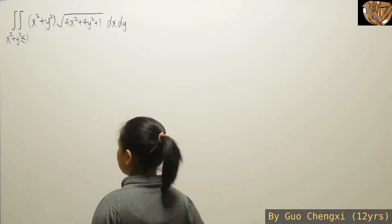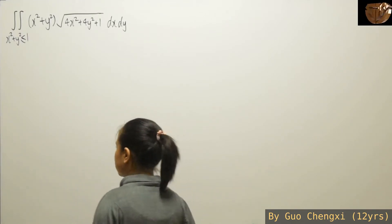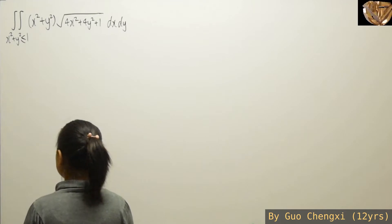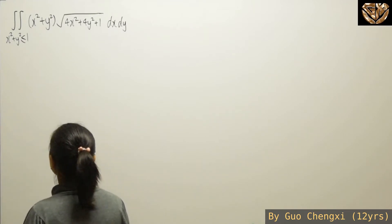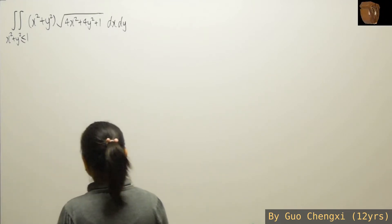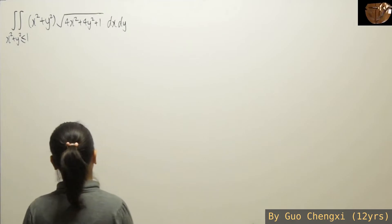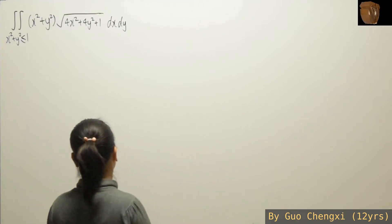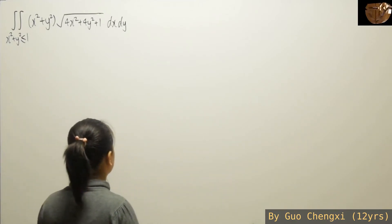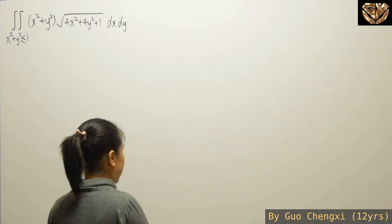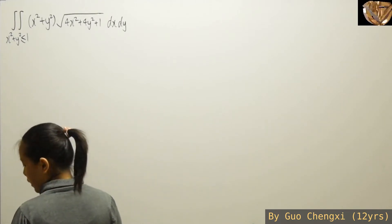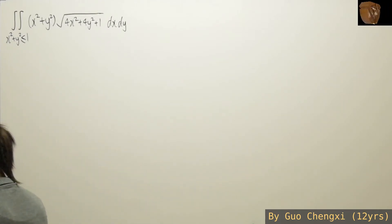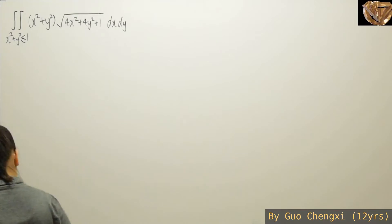For this lesson of definite integration, we have this example which is a double integration over the region x² + y² ≤ 1, of the expression (x² + y²) times the square root of 4x² + 4y² + 1, dx dy. So first, what is our model for this question?